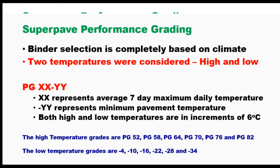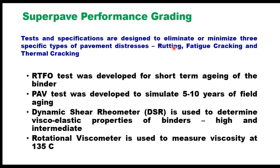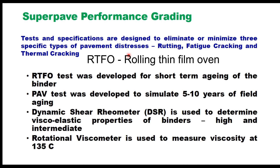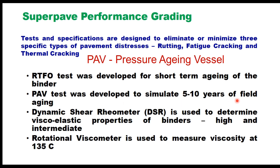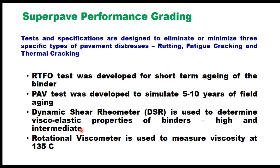In the Superpave performance grading system, tests and specifications are designed to eliminate or minimize three specific types of pavement distresses: rutting, fatigue cracking, and thermal cracking. Several equipment were developed: the Rolling Thin Film Oven test for short-term aging simulating heating, mixing with aggregate, and compaction; the Pressure Aging Vessel test to simulate 5–10 years of field aging; and the Dynamic Shear Rheometer to measure viscoelastic properties at high temperature and intermediate temperature. A rotational viscometer is used to measure viscosity at 135°C.